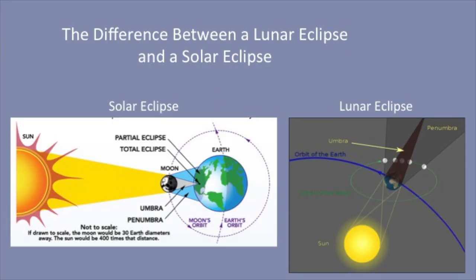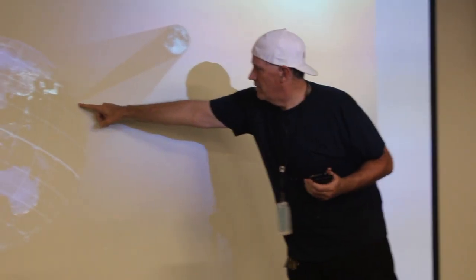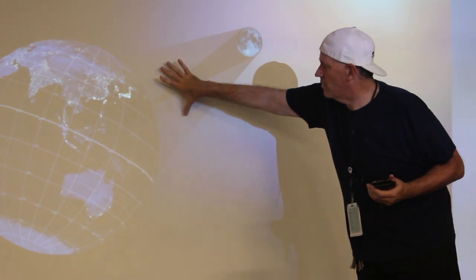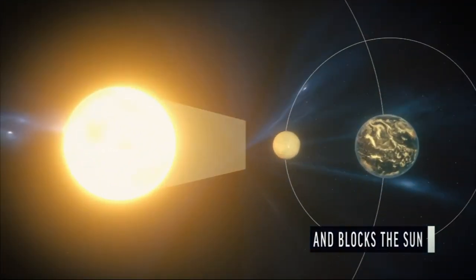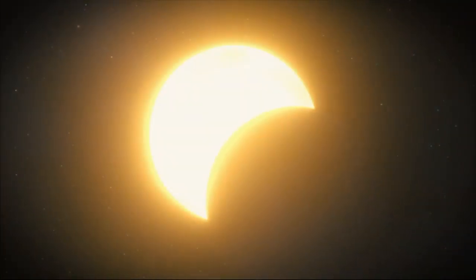You saw how much dimmer it got — about half of what we'd normally observe. This is a graphical depiction of the geometry of an eclipse: here's the sun, the earth, and the moon in its orbit. The moon passes between the earth and the sun. This cone is the umbra, and this lighter gray cone is called the penumbra. That's an animated version of what we just saw.